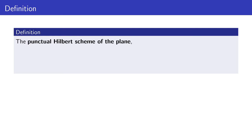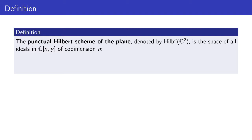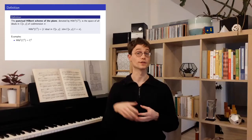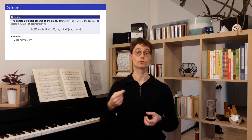The precise definition is: the punctual Hilbert scheme of length n of the plane, denoted Hilb^n(C²), is the space of ideals of C[x, y] which are of co-dimension n. For example, when n equals 1, the quotient has to be a vector space of dimension 1, which is C. So this is a field, the ideal will be maximal, described by a point. Thus the one-point Hilbert scheme is just C² itself.